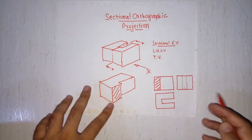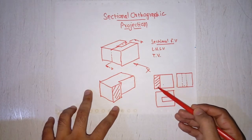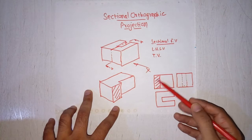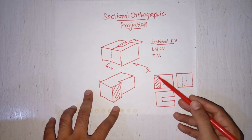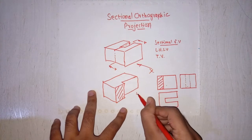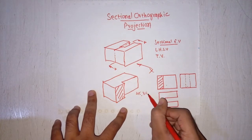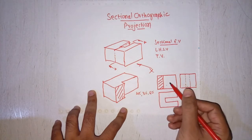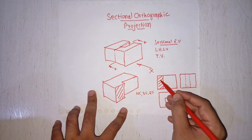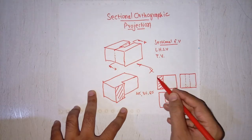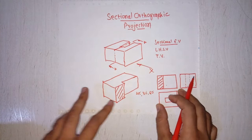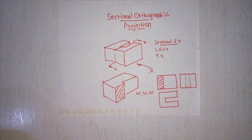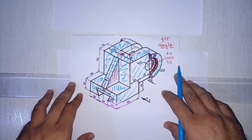While drawing sectional views, we have to show section lines on the section surface. These section lines can be at 45 degrees, 30 degrees, or 60 degrees, and the distance between two section lines should be uniform throughout. With this information, let us solve one simple problem of sectional orthographic projection.